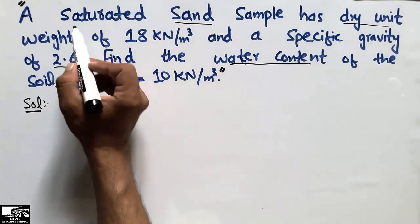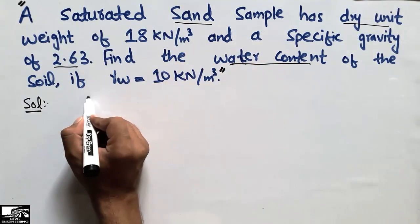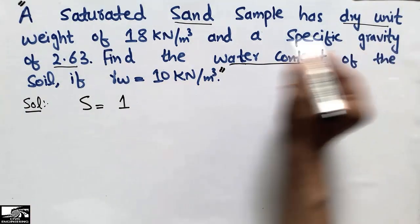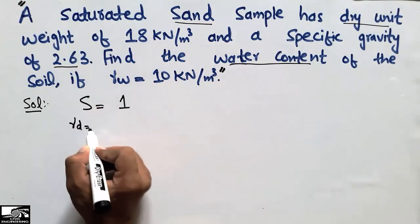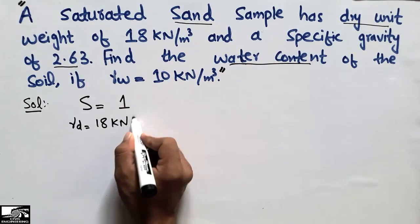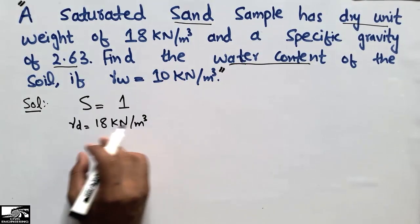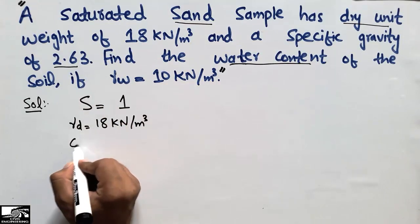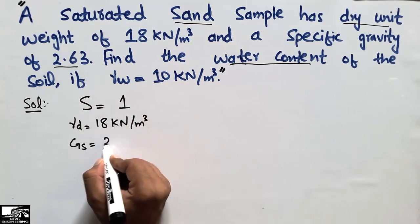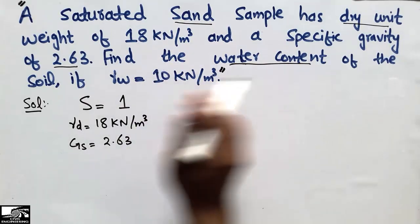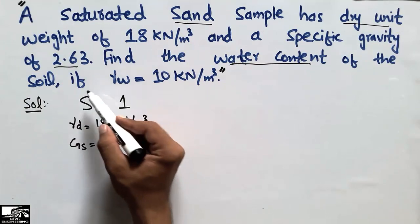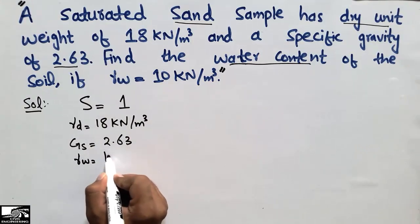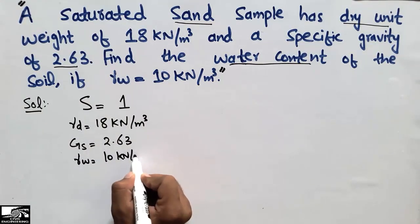Since it is given that the sand sample is saturated, the degree of saturation is equal to 1. The dry unit weight is 18 kN/m³, the specific gravity Gs is 2.63, and γw is 10 kN/m³. We want to find the water content — how much water content is present in this sand sample.